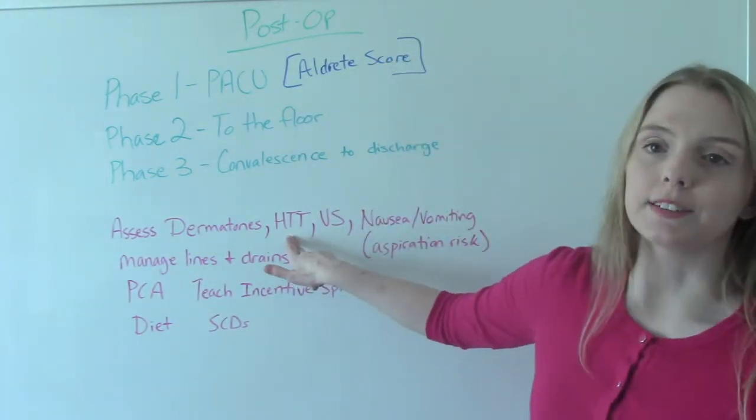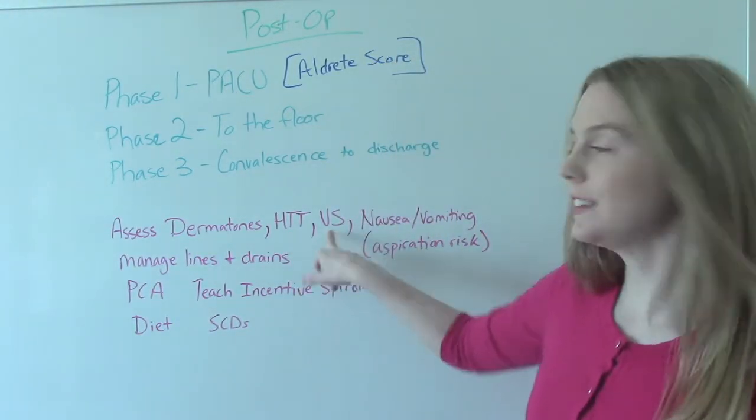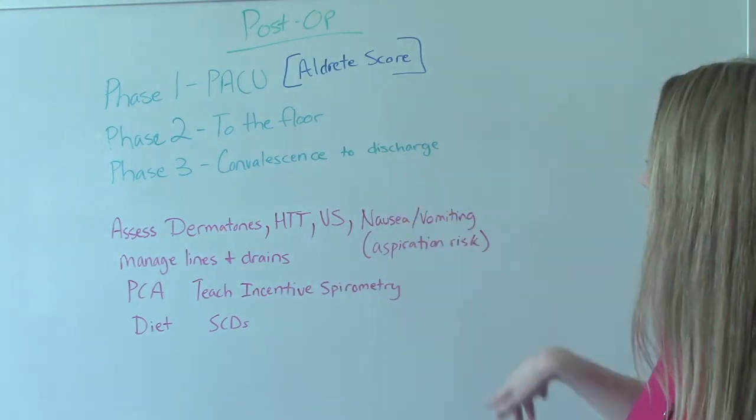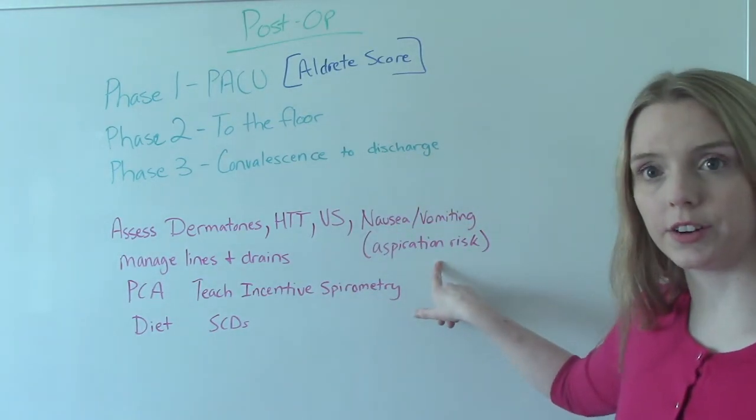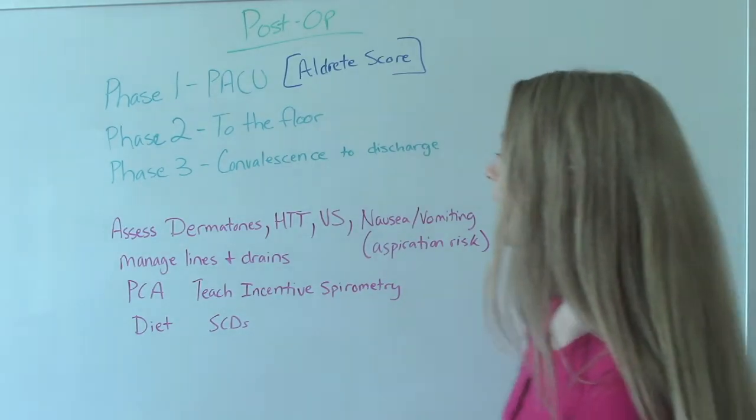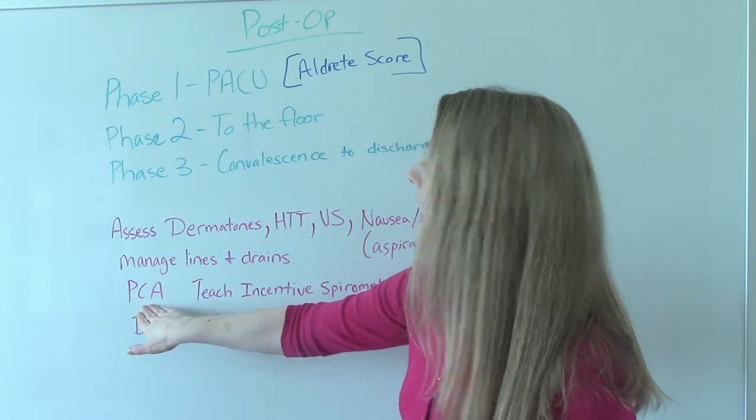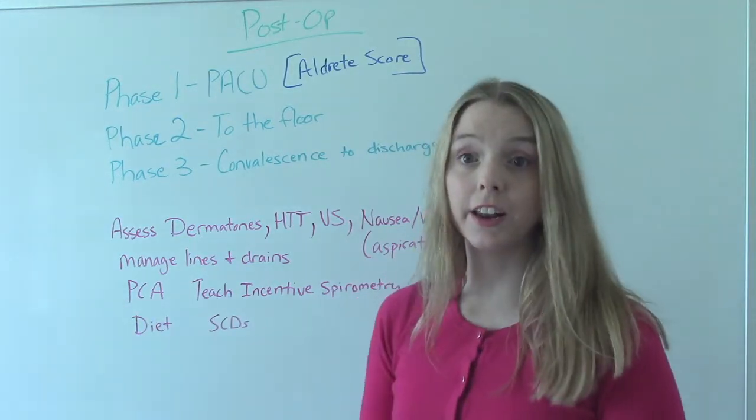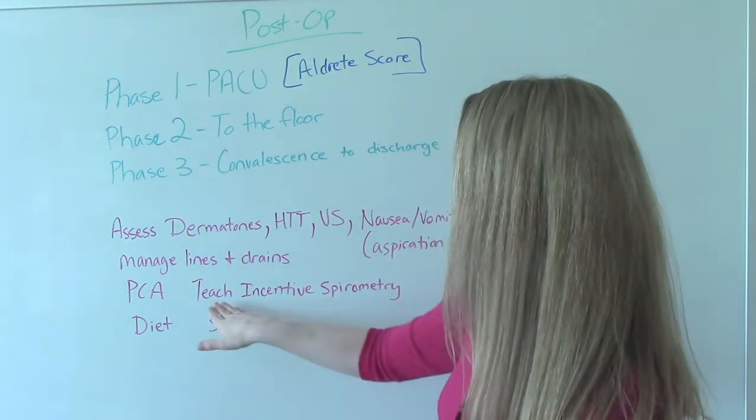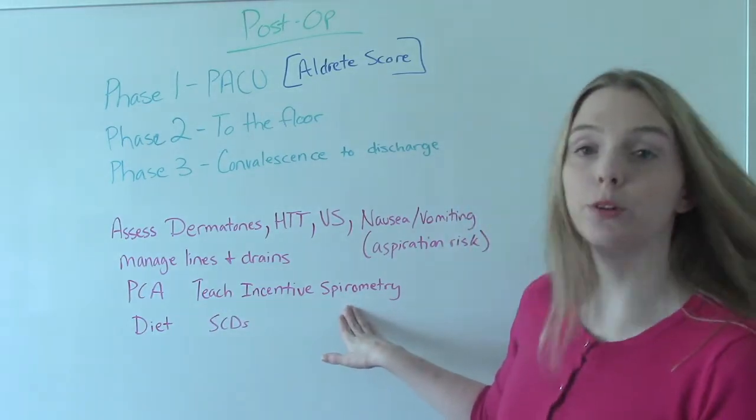Of course, we're going to do a head to toe assessment, frequent vital signs, assess for nausea and vomiting because they're at high aspiration risk during this time. If they have any lines or drains, if they have a PCA, teach them how to use the PCA and then teach them how to use an incentive spirometer.